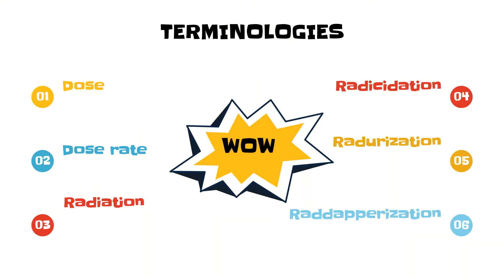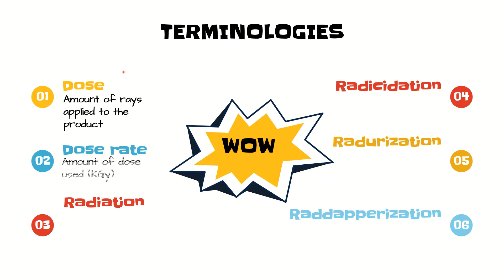These are the basic terminologies used in irradiation. First is dose — the amount of rays applied to the product. Dose rate is the amount of dose applied per unit time. The unit used is kilograys.